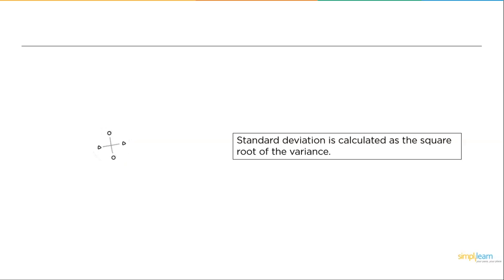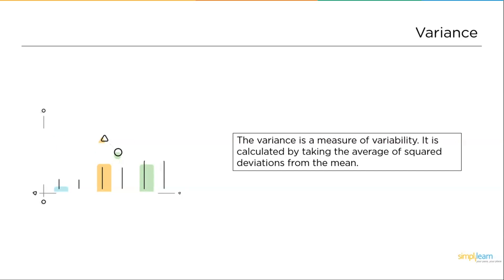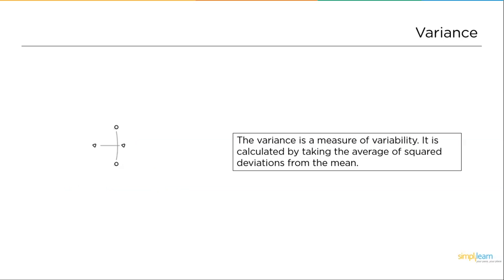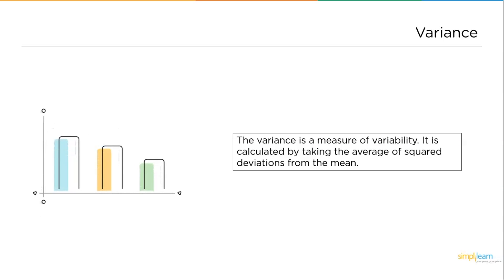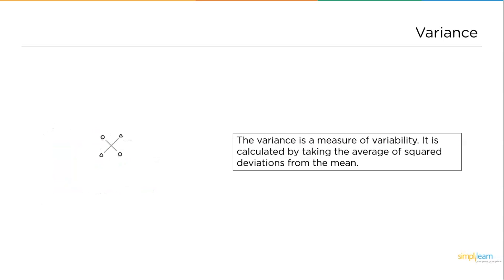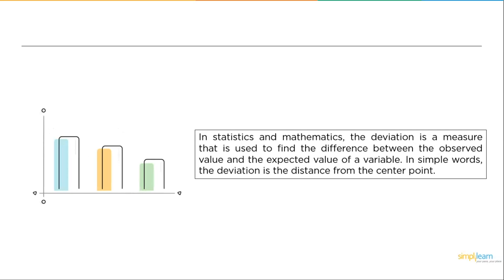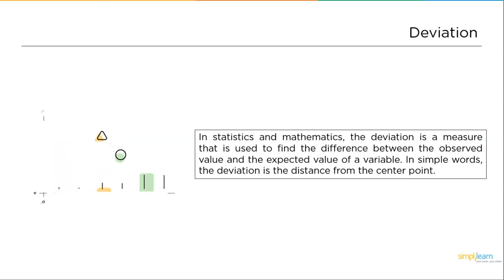Let's also understand what variance is. Variance is a measure of variability. It is calculated by taking the average of squared deviations from the mean. Now what are deviations? Slowly you can understand that we are getting into the topic of statistics and graphs.